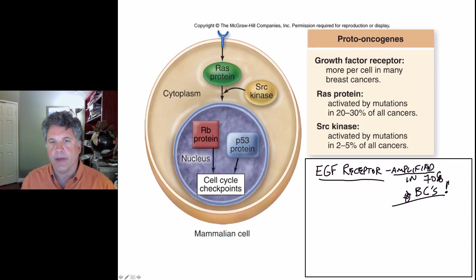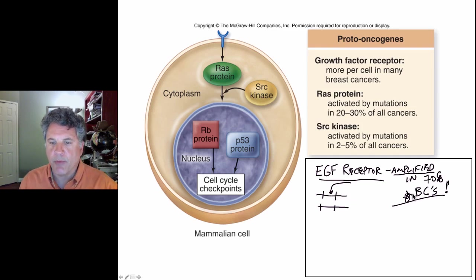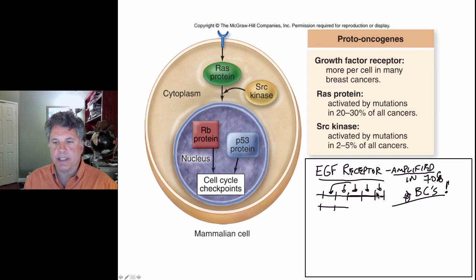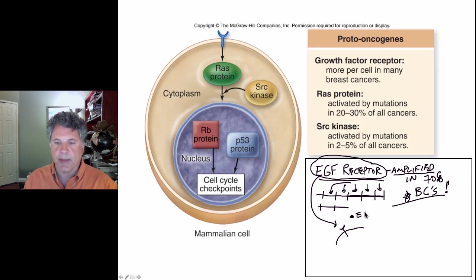By amplified here, we're not talking about the amplification of a kinase cascade — we're talking about amplification of the actual gene that encodes the EGF receptor. Normally in a normal diploid human cell you would have two copies of the EGF receptor gene, but in 70% of human breast cancers that gene becomes amplified into many copies, encoding much more EGF receptor protein than a normal cell would have.